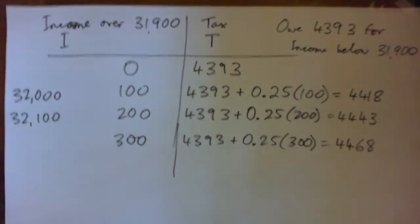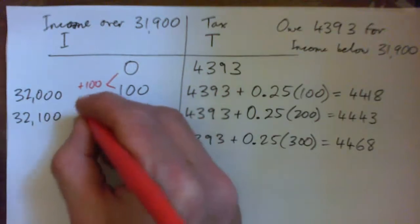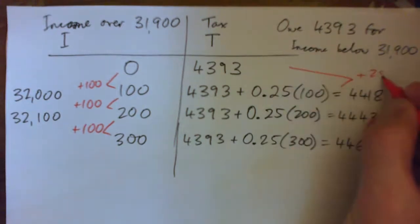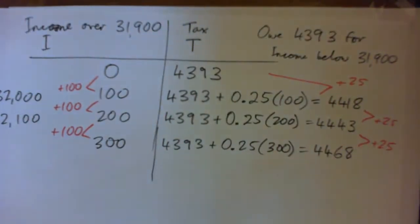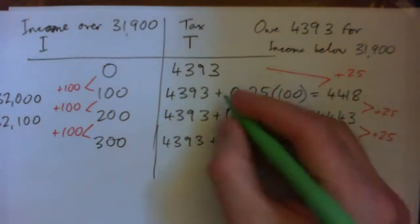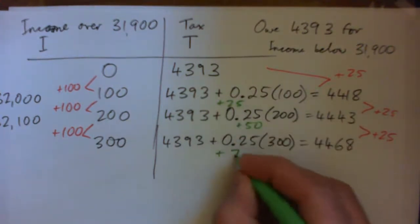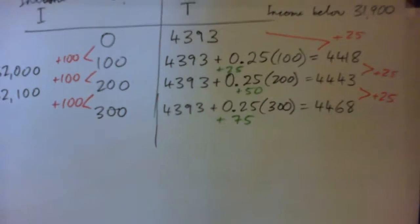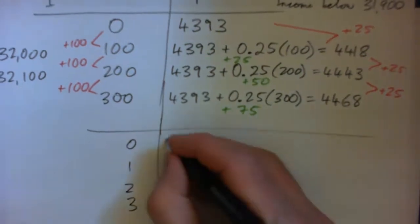As our taxable income increases by $100 each time, our tax owed is increasing by $25 each time. You can see it: $4,393, then $4,393 plus $25, then plus $50, then plus $75 — we're adding $25 for every extra $100 in income, or you could look at it dollar by dollar.